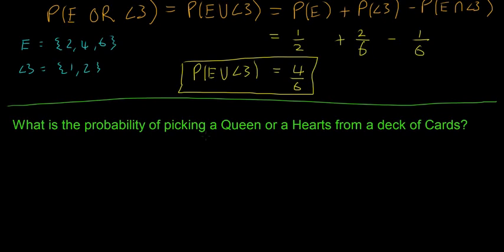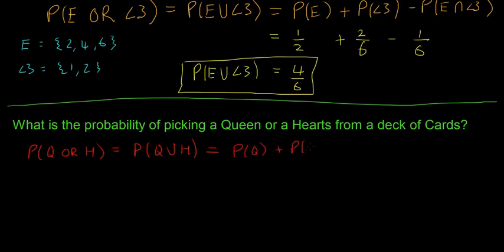In this case: what is the probability of picking a queen or a hearts from a deck of cards? I'll start by writing P(Q or H), which is the same as P(Q ∪ H), and that equals P(Q) + P(H) − P(Q ∩ H).